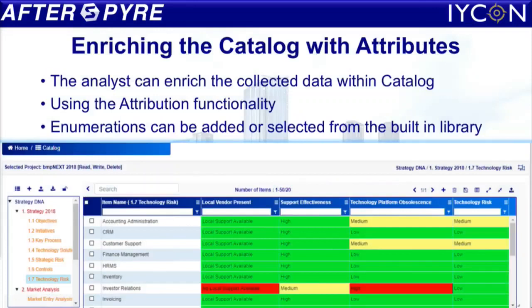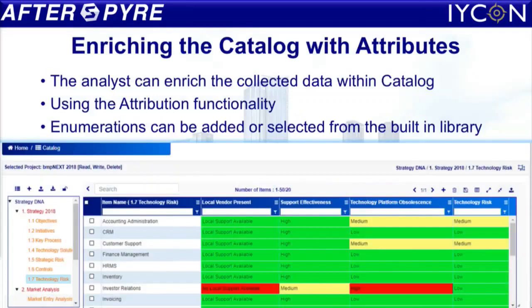There's a discovery phase where you capture all the information. The information in the catalog can be enriched with attributes, which can be from the built-in attributes of Afterspire or they can add their own attributes. You can create enumerations for the attributes too and you can color code them so that they look much better.